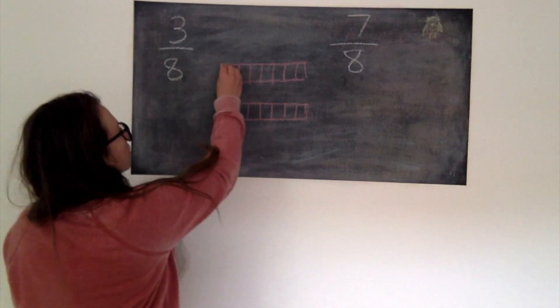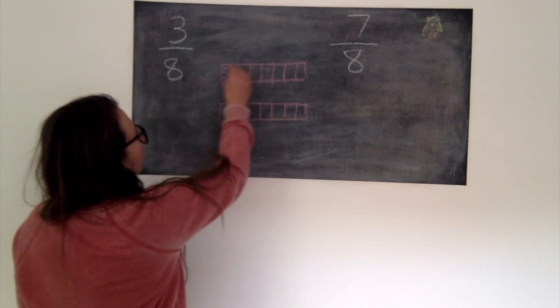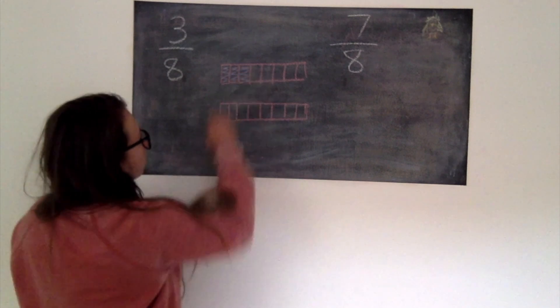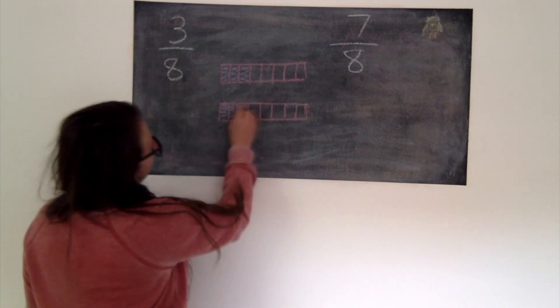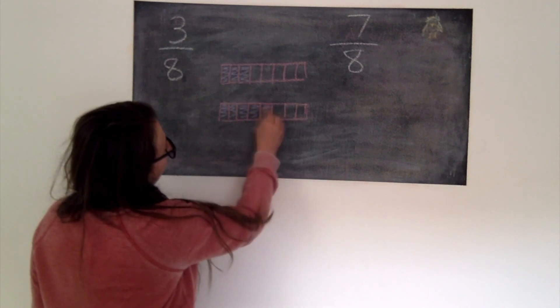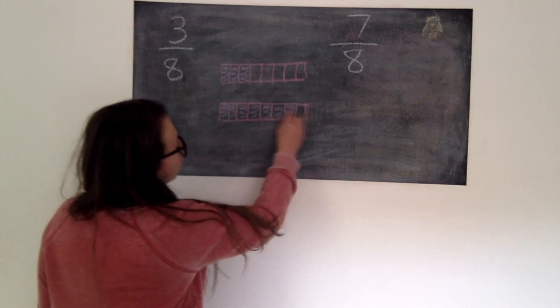So 3/8ths I need to shade in 3 out of my 8 pieces and then my 7/8ths underneath I need to shade in 7 pieces of my 8. So I'm only one away from having the whole.